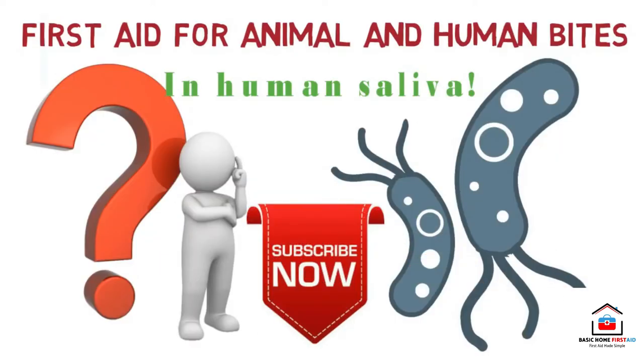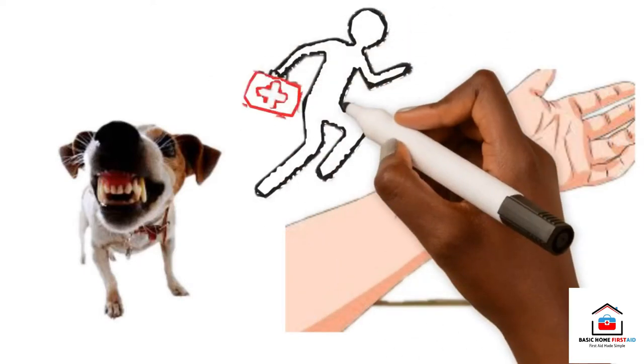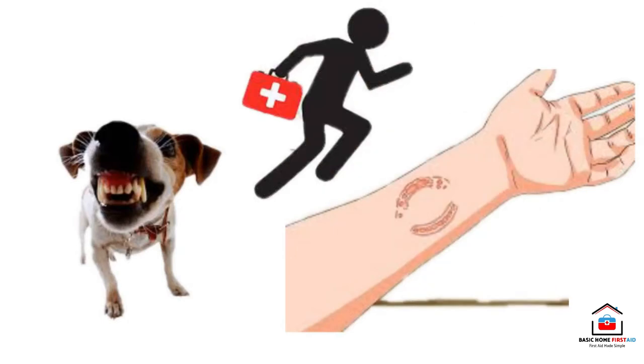Bites from sharp pointed teeth can cause puncture wounds that can damage tissue. Any bite that breaks the skin needs prompt first aid because there is a high risk of infection.